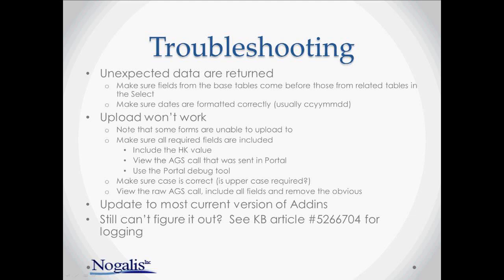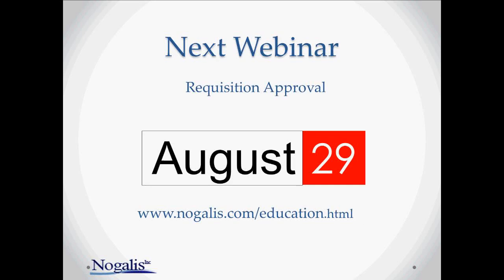This concludes this presentation. We're planning to have another one on requisition approval on August 29th — that's about a month and a few days from now. We hope that you'll join us on that one as well. You can sign up for it by going to nogalas.com/education a little bit later today. We will send you reminders, and if you're on our email list, you'll get an email reminder to sign up for that course as well.